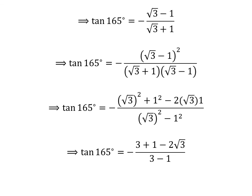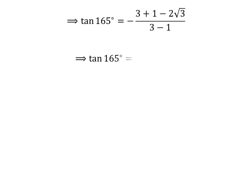Square of square root of 3 is 3 and square of 1 is 1. So tangent of 165 degrees is equal to minus 3 plus 1 minus 2 times square root of 3, upon 3 minus 1. Further simplification gives us tangent of 165 degrees is equal to minus 4 minus 2 times square root of 3, upon 2.